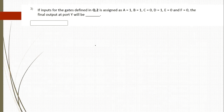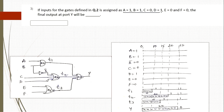The third question: if the inputs of the gates defined in question 2 are assigned those same values, what is the output at port Y? The answer is 0 — output Y equals 0.